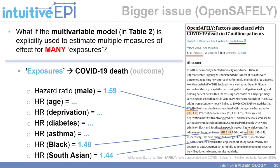Now we're going to move on to a bigger issue, using the following paper to illustrate when the Table 2 fallacy can become even more entrenched. On the right-hand side, you can see a paper known as OpenSafely, titled 'Factors Associated with COVID-19 Death in 17 Million Patients.' The first author is Elizabeth Williamson and the senior or last author is the prominent researcher Ben Goldacre. This study was published in the journal Nature, a very high-profile scientific journal, and at the time of this screenshot it had approaching 200,000 accesses.